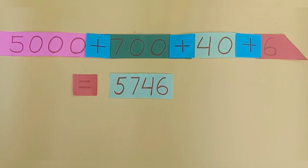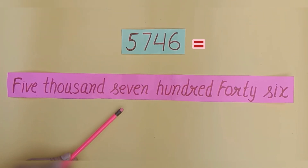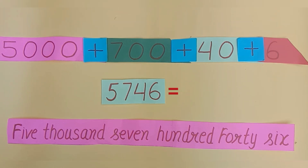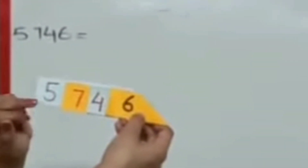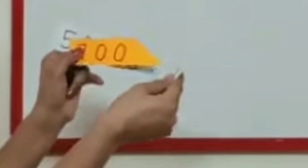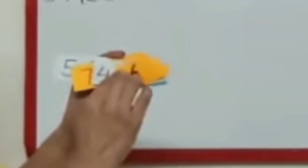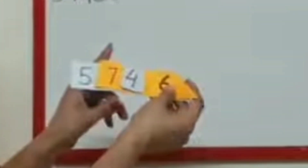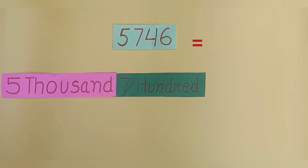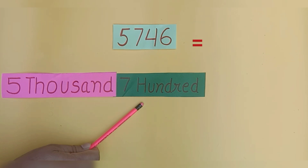Our number is 5,746, and we will write this number as follows. Here we have place value cards for this number. As you see, in this number, how many thousands do we have? We have 5 thousands in this number. And how many hundreds are in this number? We have seven hundreds in this number.